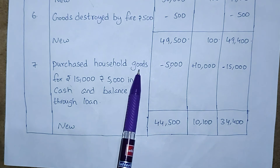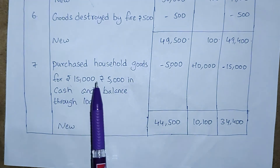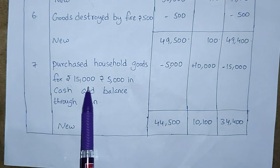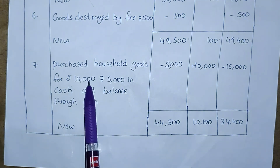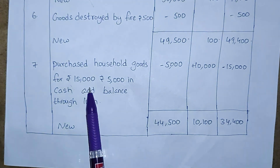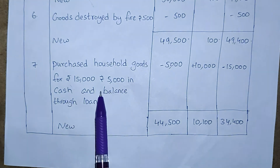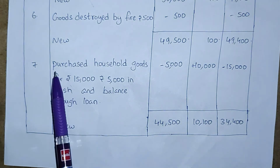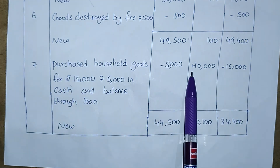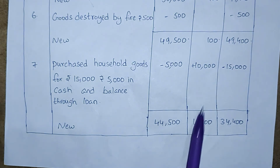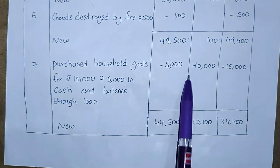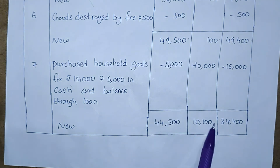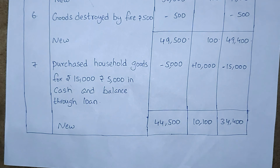Last part: purchased household goods for Rs. 15,000. He did not pay the full 15,000 — instead he paid only 5,000 in cash and the balance through a loan. So remove 5,000 from cash in assets and add 15,000 as assets (goods), and add 10,000 loan to liabilities. 49,500 minus 5,000 is 44,500 plus 15,000 gives 59,500 in total assets. Liabilities become 10,100 and capital remains 49,400. Like that you have to complete your answer once you get a question regarding this accounting equation.